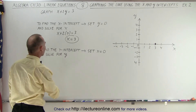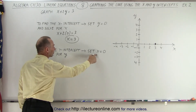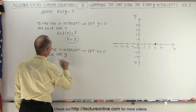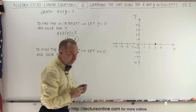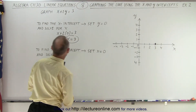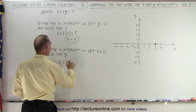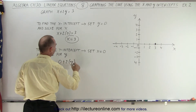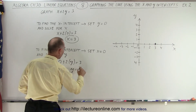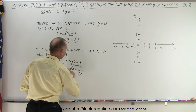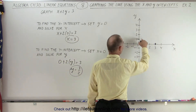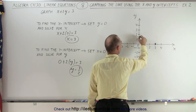We do the same to find the y-intercept. We're going to set x equal to 0 and solve for y. So we have 0 plus 2 times y equals 3. Divide both sides by 2 — we get y is equal to 3 over 2. And clearly, that is the y-intercept. So that's 1 and a half, halfway between 1 and 2 right there.